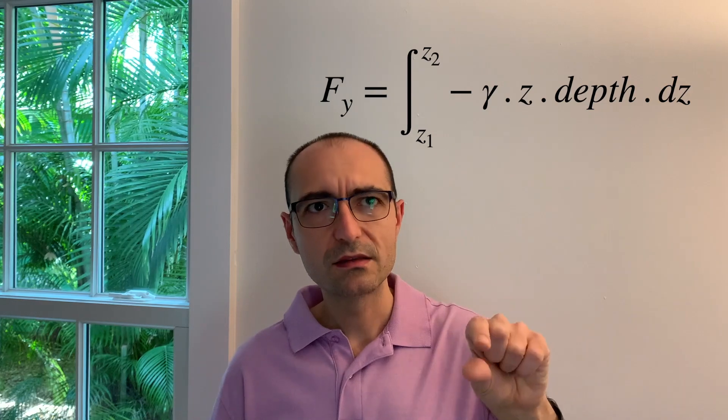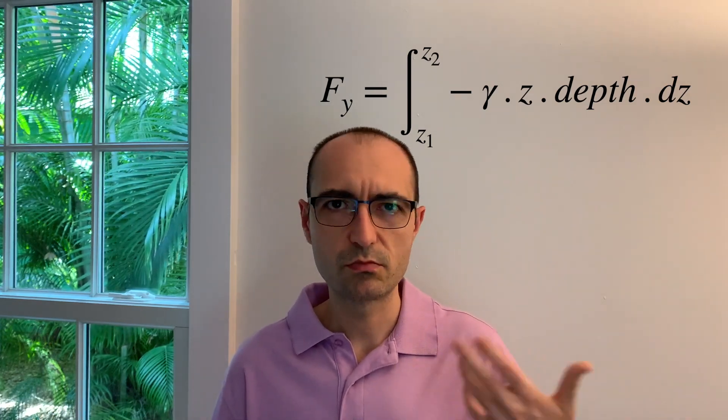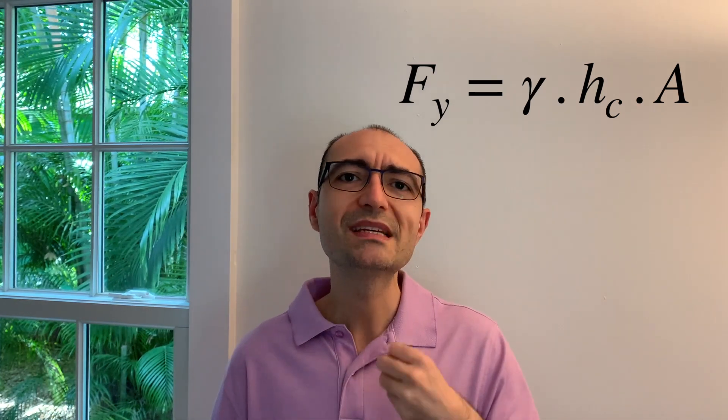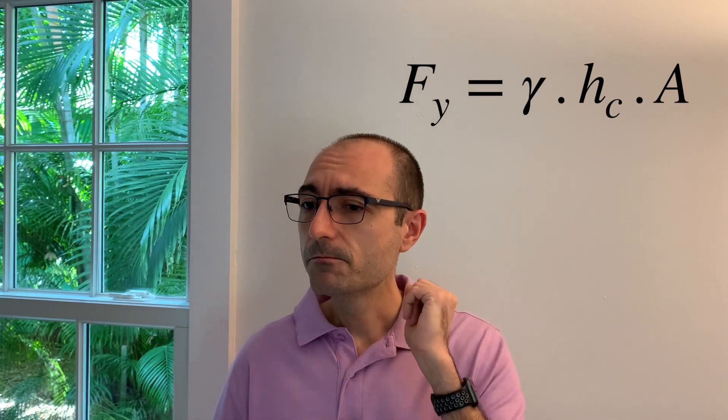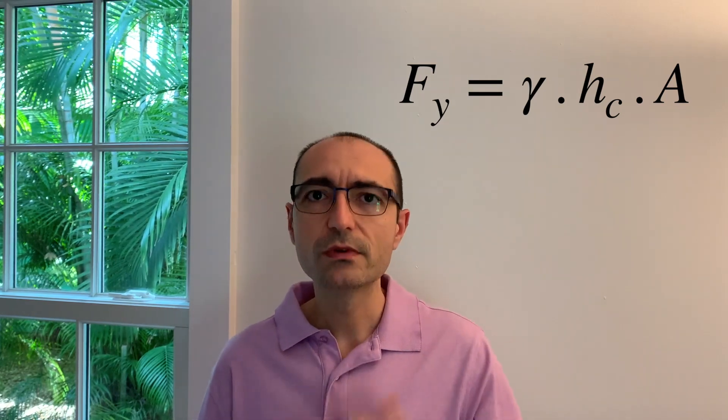I showed you three separate ways to calculate the horizontal force. The first was the integration method: I take a small strip, calculate the force of that, and then integrate — a fairly standard engineering approach. The second approach was a formulation method: the force equals specific weight times hc, where hc is the geometric center of the projected vertical face, times the area of that projected vertical face — not the original area.